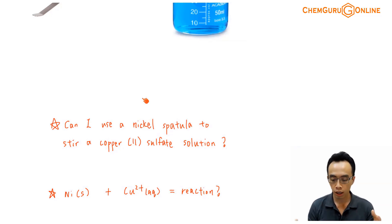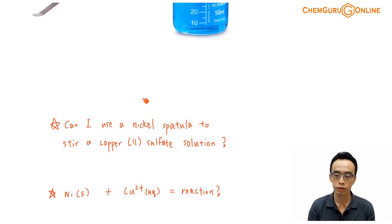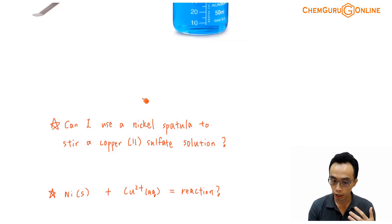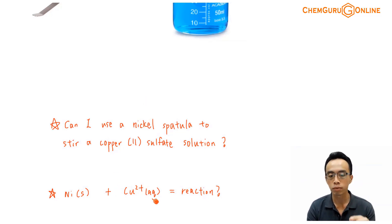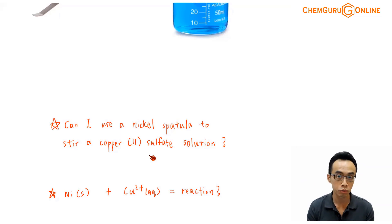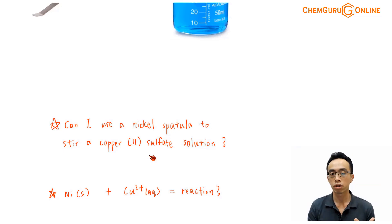To phrase it in a way that helps us recognize this as an electrochemistry question targeting feasibility, we can ask: is the reaction between nickel metal and copper(II) ions feasible? Phrased this way, we know we have to consider the redox reaction between nickel metal and copper(II) ions, and we will have to look at the E° values in the data booklet.